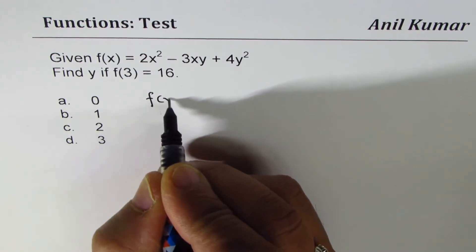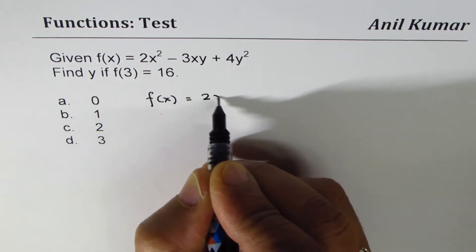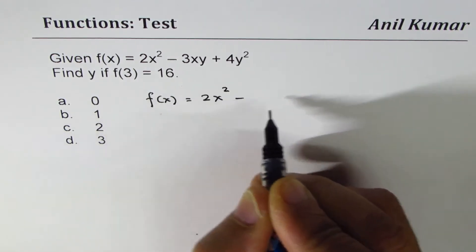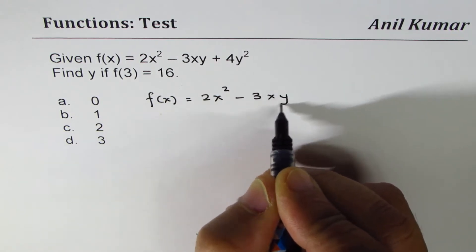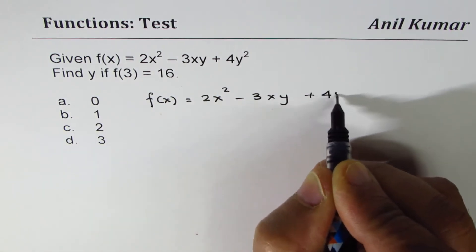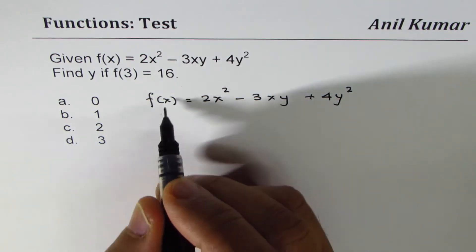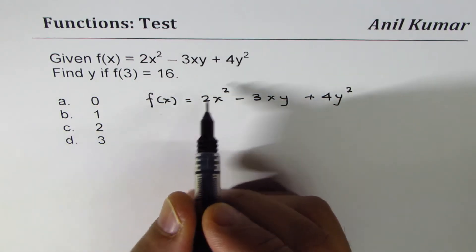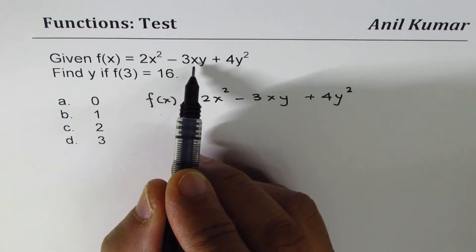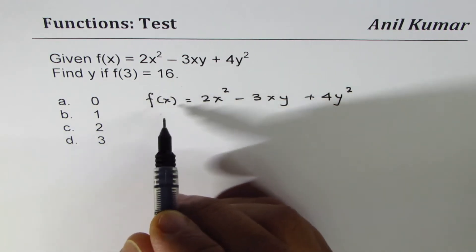We are given f(x) = 2x² - 3xy + 4y². Now actually, it should have been f(x,y) since we have a function in terms of both x and y, to be very frank.